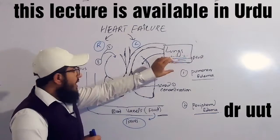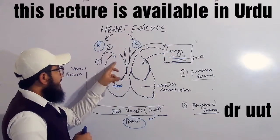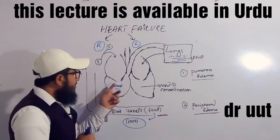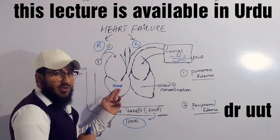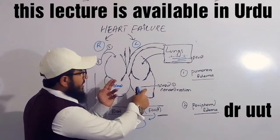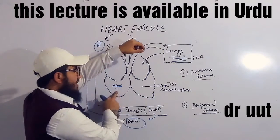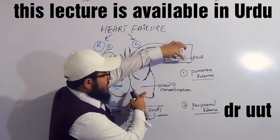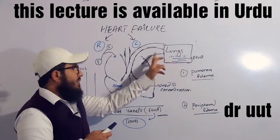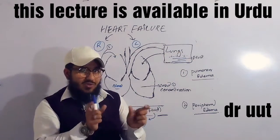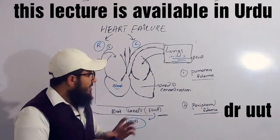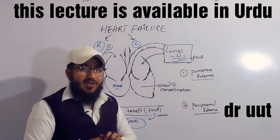This pressure will be forwarded towards the lungs. We know that blood is supposed to come from the right atrium to the right ventricle, and then be pumped towards the lungs. So now a kind of pressure is provided by the right ventricle, and also a kind of pressure is provided by the blood from the left ventricle. The pressure from both ventricles will increase the pressure in the capillaries present in the lungs.